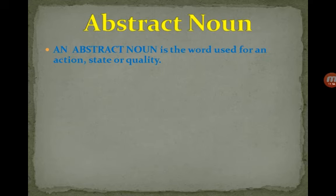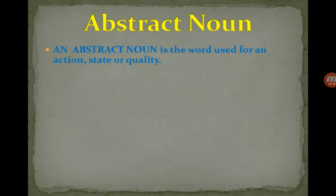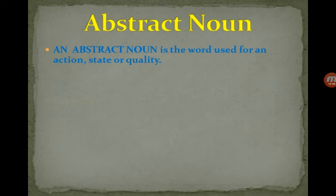Next is abstract noun — something which we cannot touch and feel. An abstract noun is a word used for action, state, or quality. Can you see any action? No — we can feel it. Sleep is a state; can you see sleep as a state? No. These things that cannot be touched or felt physically are abstract nouns.